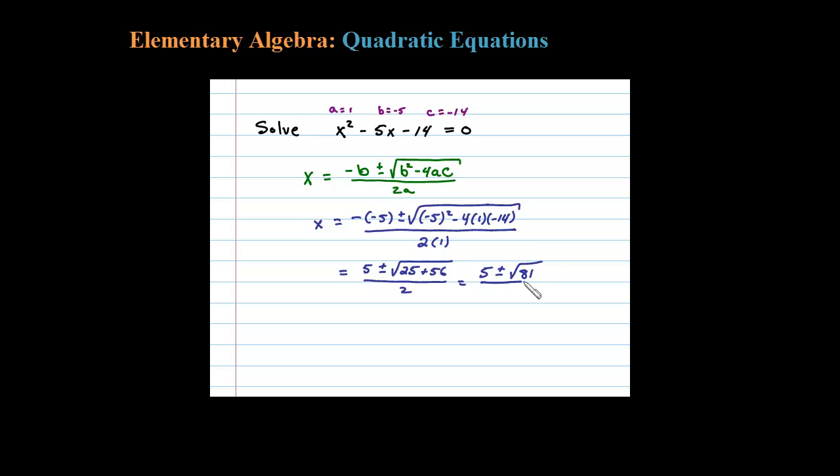So 5 plus or minus the square root of 81 over 2. So 5 plus or minus 9 over 2, because the square root of 81 is just 9.